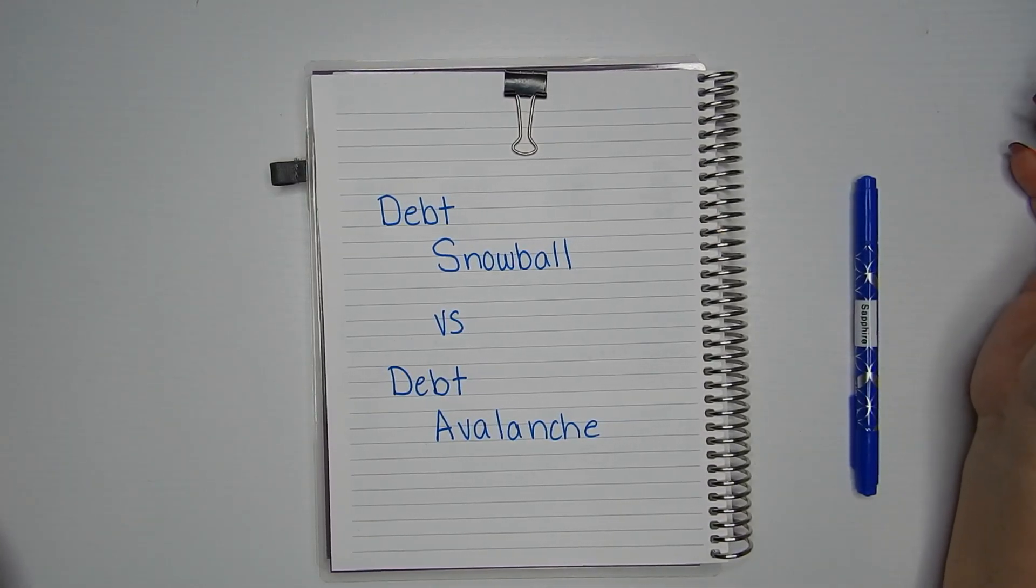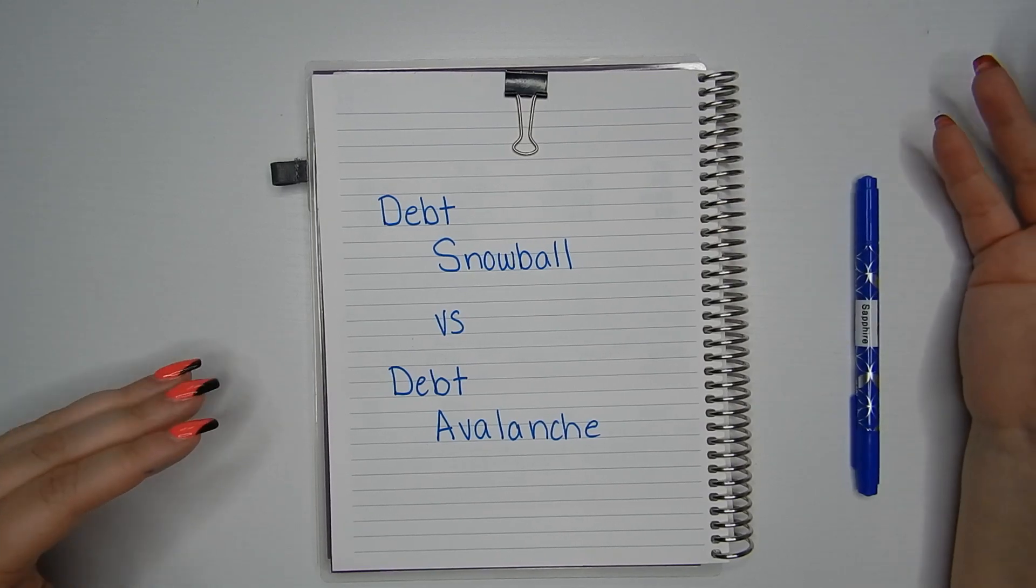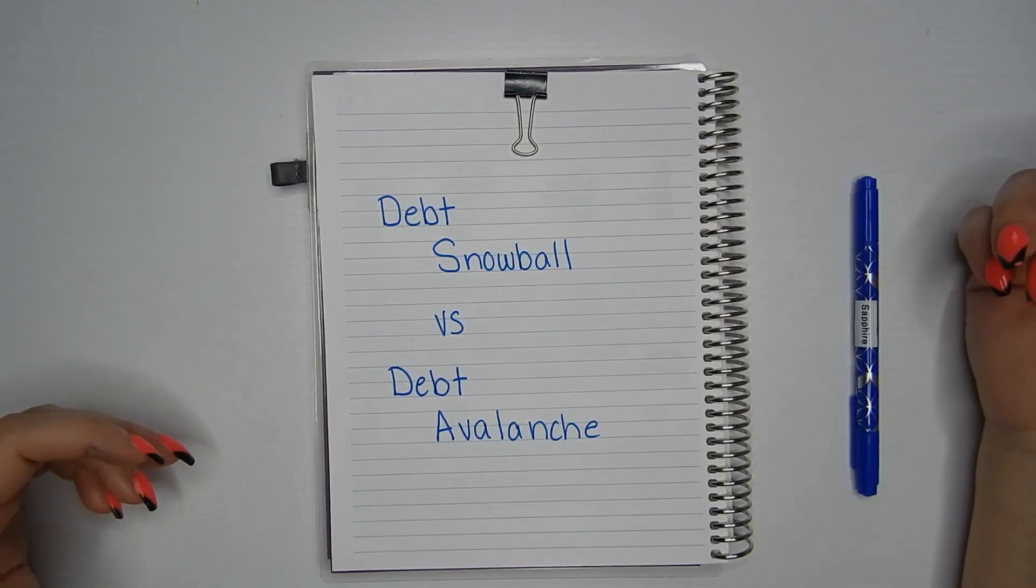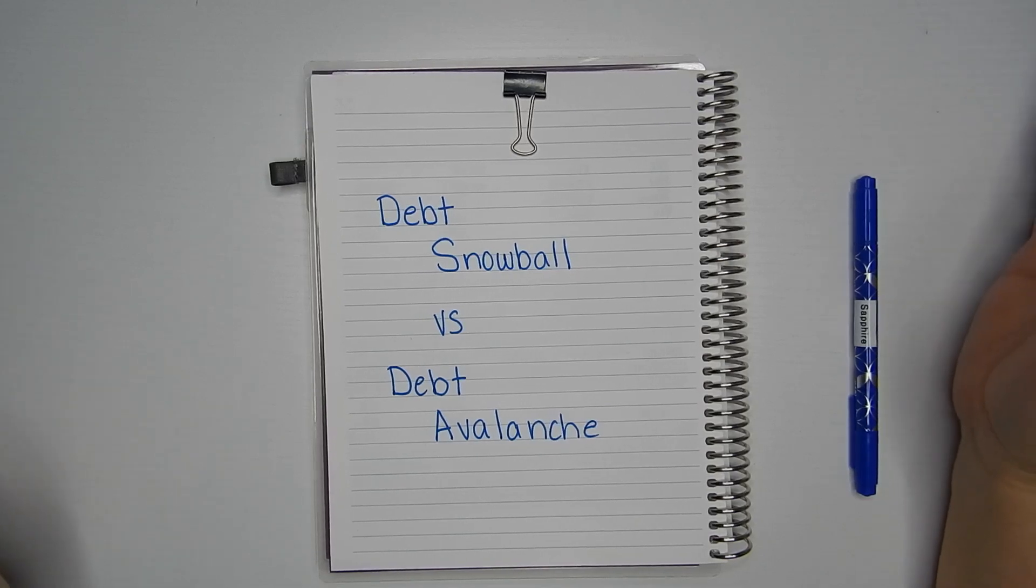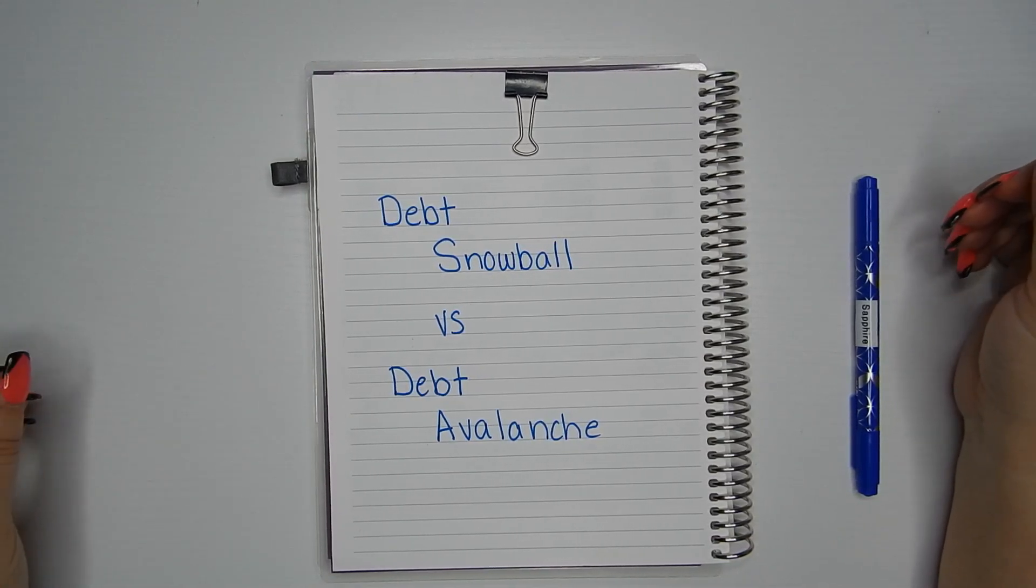So what are we going to do today? I've gotten a question a couple times in my DMs and on some videos about trying to figure out the difference between the debt snowball and the debt avalanche. So I thought I would draw up a real simple example, leaving out some of the details like calculating interest, and just kind of compare the two.